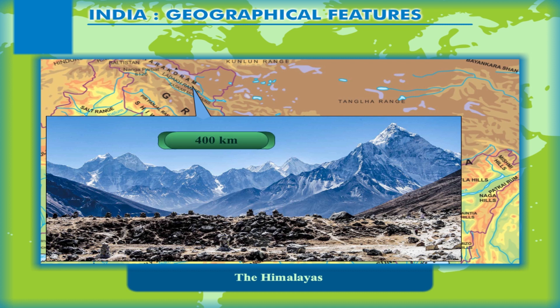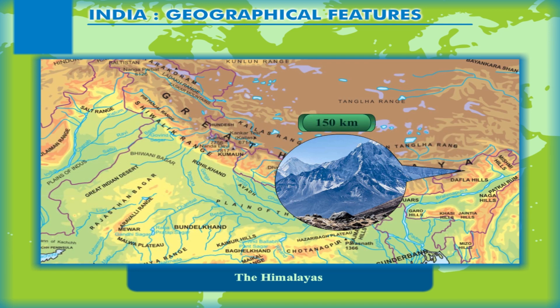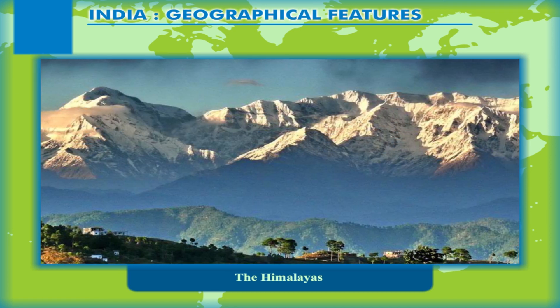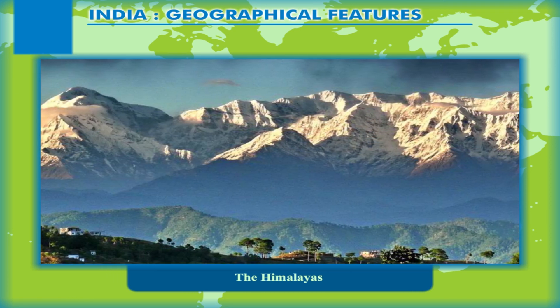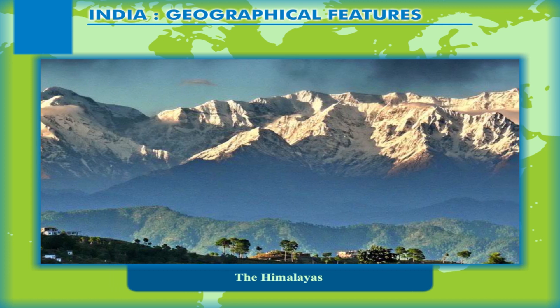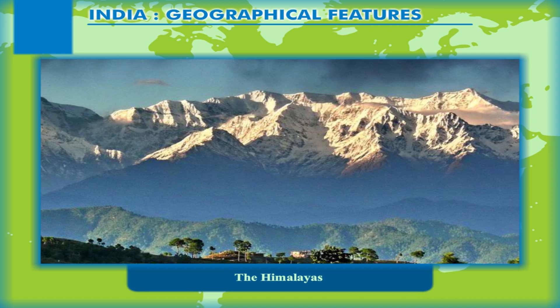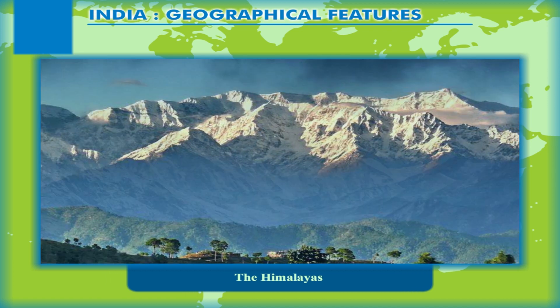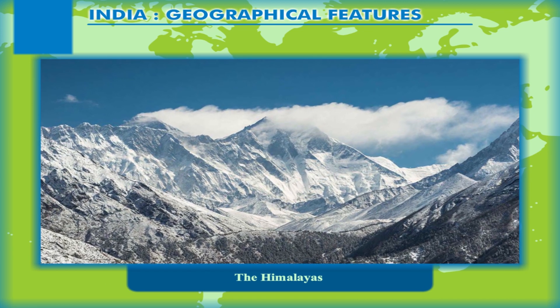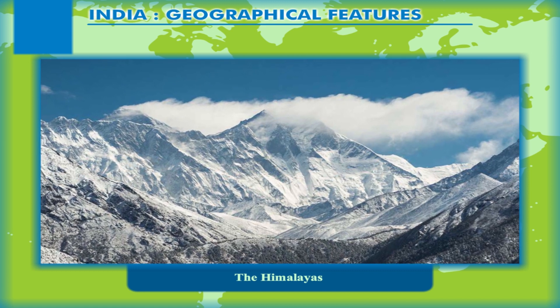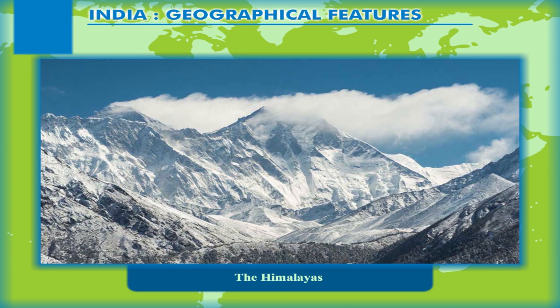The Himalayas are about 400 km wide in Kashmir towards the west, while their width in the east in Arunachal Pradesh is only about 150 km. However, the Himalayas in the eastern half are higher than those of the western half. From north to south, the Greater Himalayas or Himadari is the northernmost and the highest range of the Himalayas.